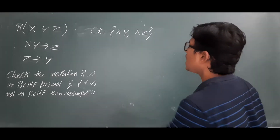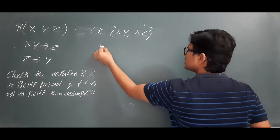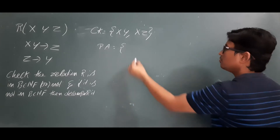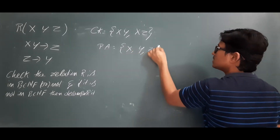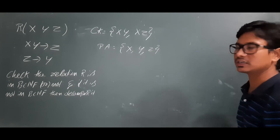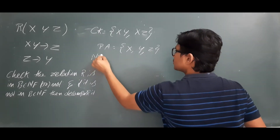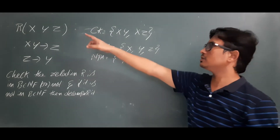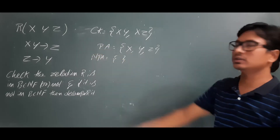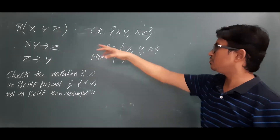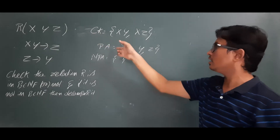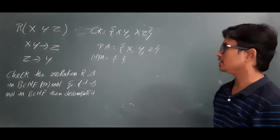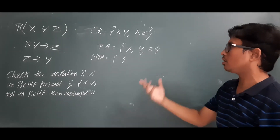As they have given the candidate keys, we can easily find the prime attributes. The attributes which are there in the candidate keys will come into the prime attributes list. X, Y, Z — all the attributes of relation R are in the prime attributes, so the non-prime attributes list will be empty. The non-prime attributes are those in relation R but not in the prime attributes list.